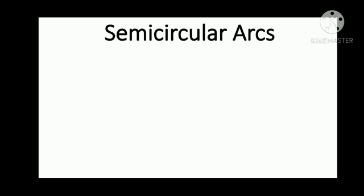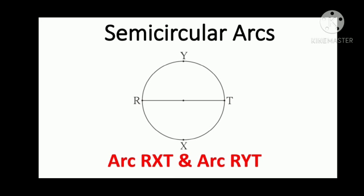Semi-Circular arcs. In the given figure, chord RT is the diameter of the circle. The diameter gives rise to two equal arcs. They are called semi-circular arcs. The measure of a semi-circular arc is 180 degrees. Children, here the semi-circular arcs are arc RXT and arc RYT.